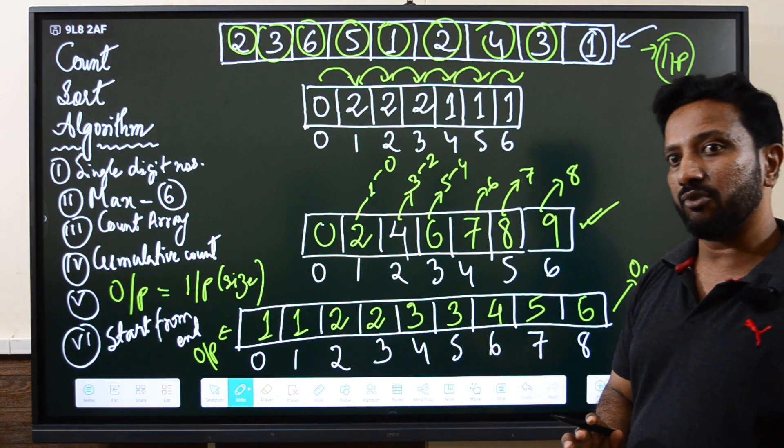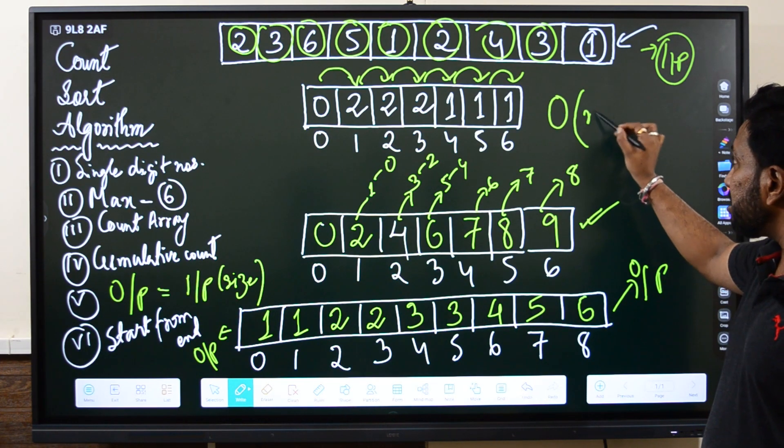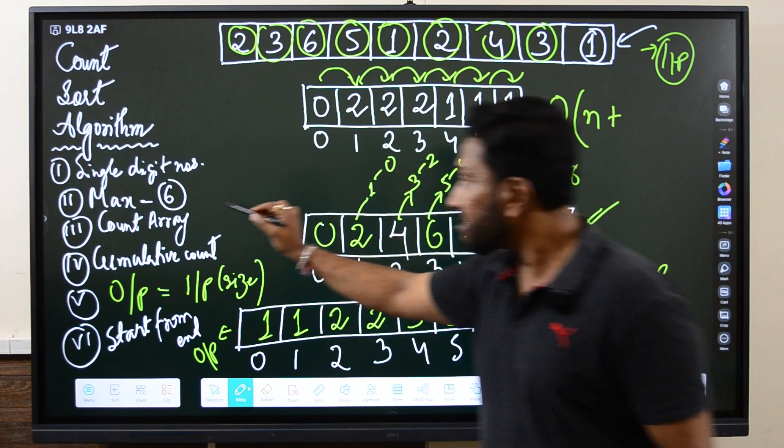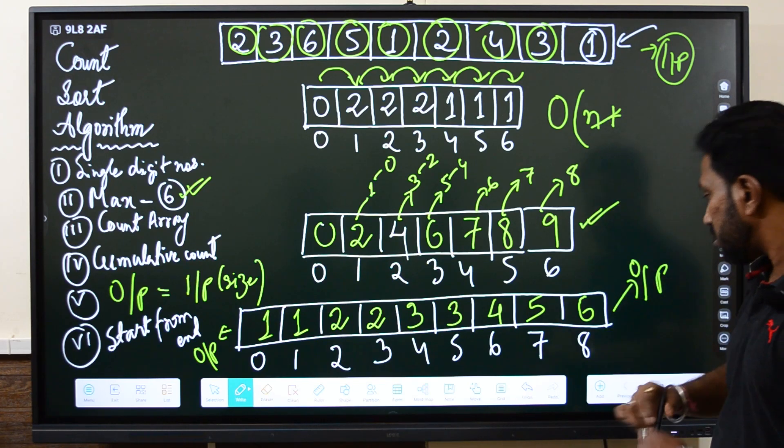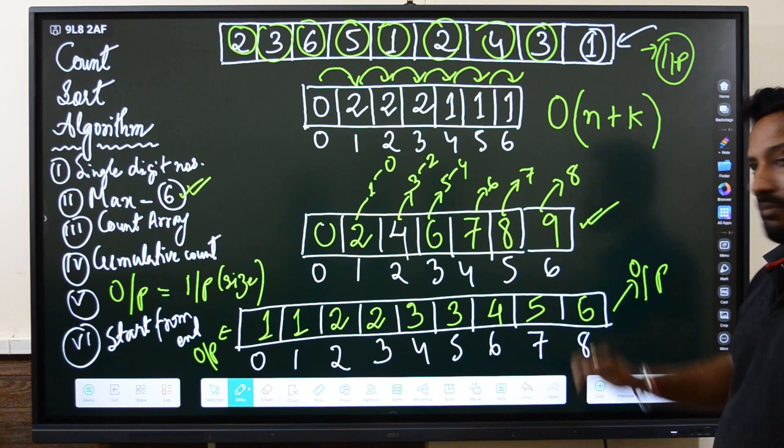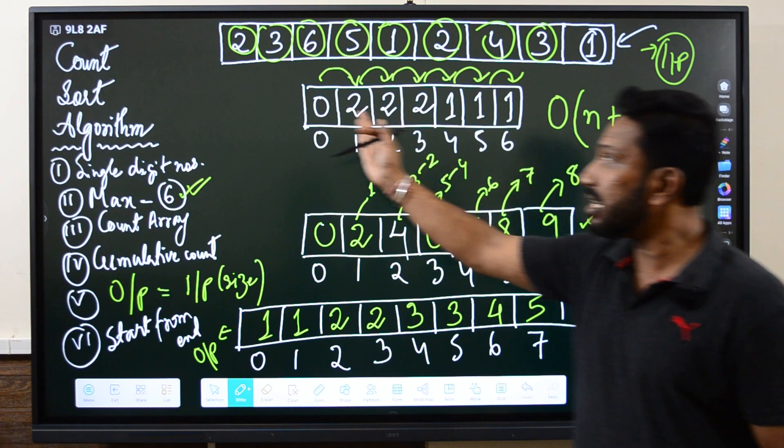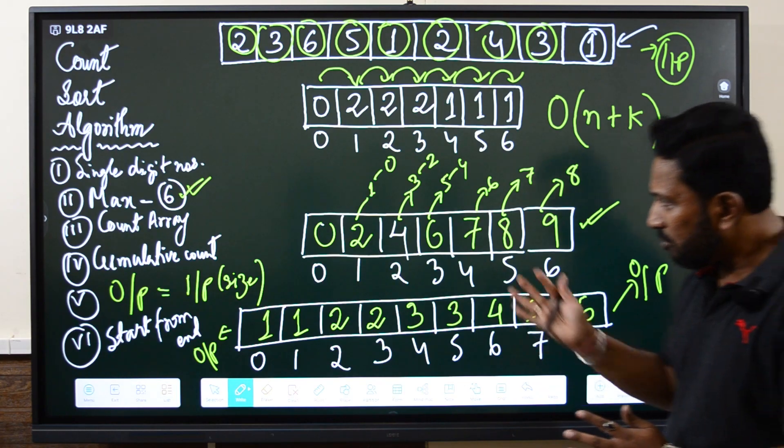Talking about the time complexity, the time complexity is big O of n plus this max value k, because depending on that only we will be taking the iterations. I hope you have understood this.